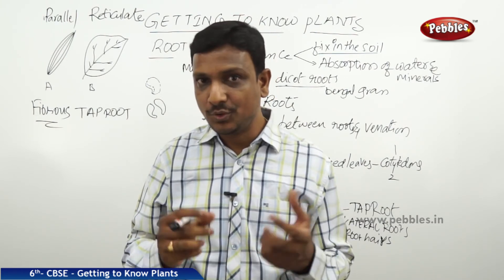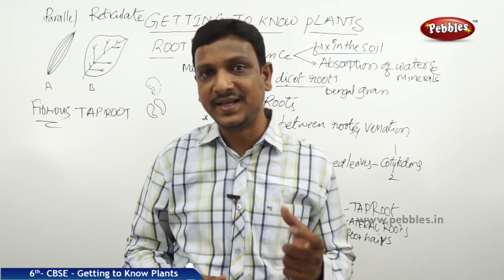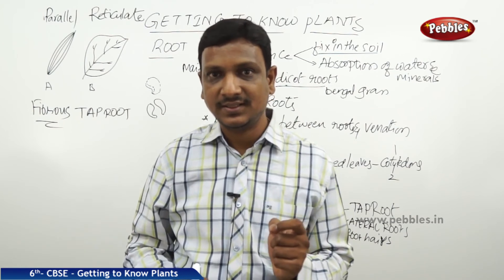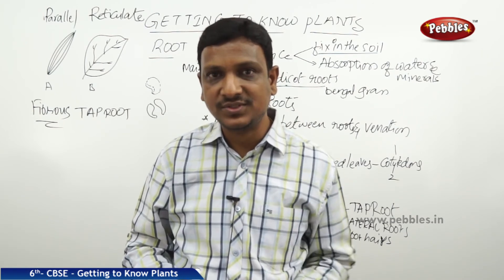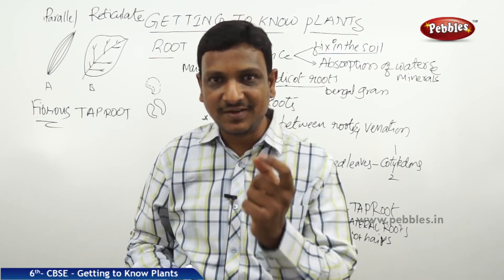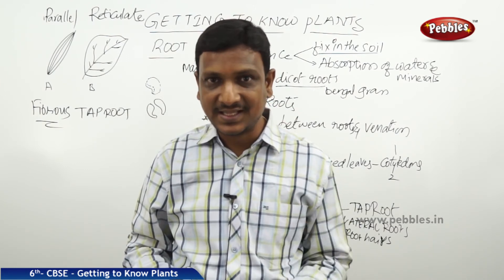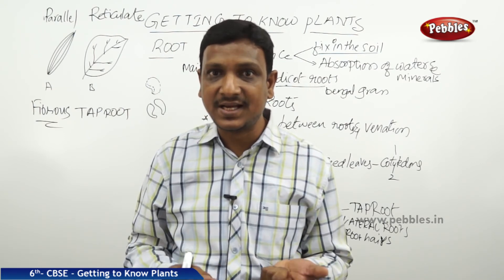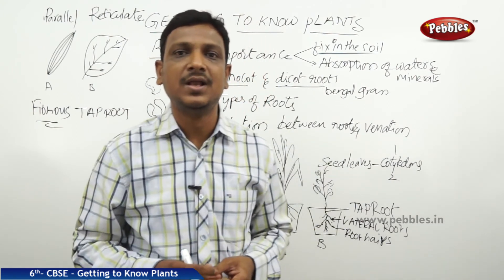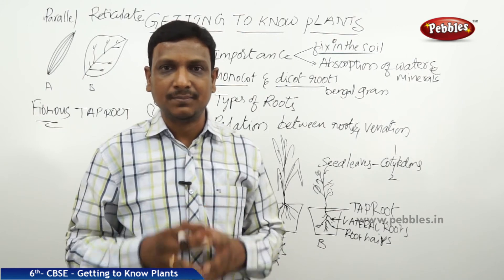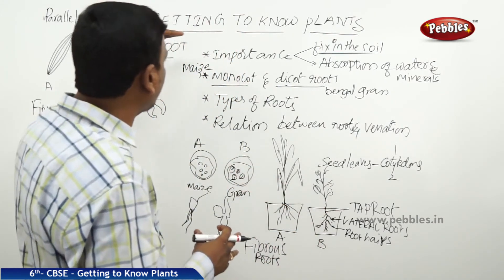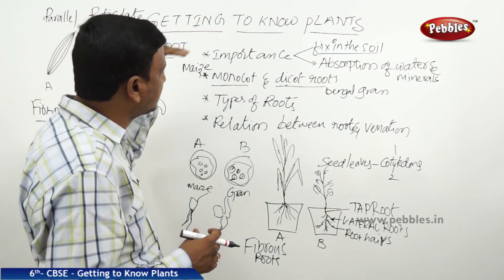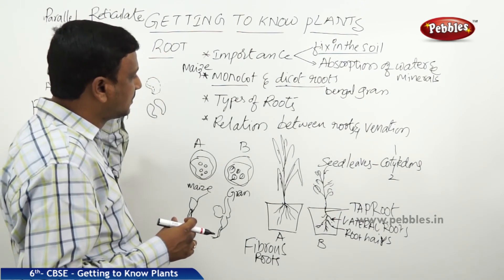Not only the leaf — if you are given seeds, by looking at the seeds you can also tell. Seeds with a single cotyledon are monocots with fibrous root system and parallel venation. Seeds with two cotyledons are dicots with reticulate venation in the leaves and taproot system in the root. That is all about the roots of plants — we studied importance of root, types of roots, and relation between roots and venation.